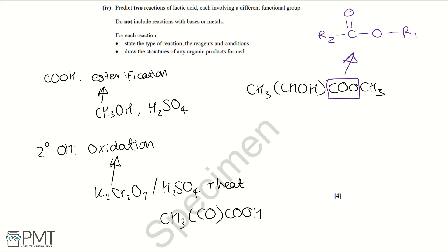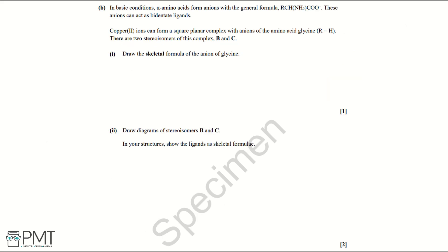Part B: in basic conditions, amino acids form anions with the general formula RCH(NH₂)COO⁻. These anions can act as bidentate ligands. Copper(II) ions can form a square planar complex with anions of the amino acid glycine, where R = H. There are two stereoisomers of this complex — B and C. Part one: draw the skeletal formula of the anion of glycine, which is H₂N connected to CH, connected to COO⁻.